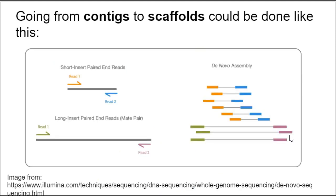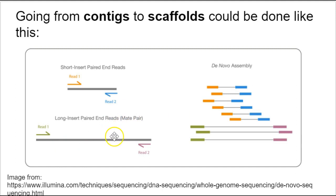Going from contigs to scaffolds can be done like this. You might take data from short insert paired-end reads, like what we're getting from the Illumina sequencer at the Hubbard Genome Center at UNH — 250 base pair fragments, relatively short. And you might compare that with older data where you had longer inserts, or perhaps Sanger data. When we combine these different pieces of information algorithmically, we can regenerate an assembly of longer fragments referred to as scaffolds.